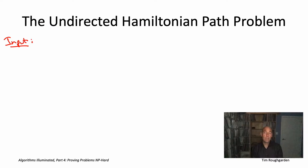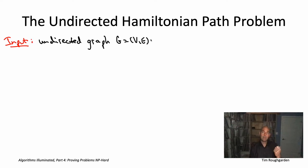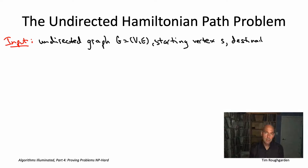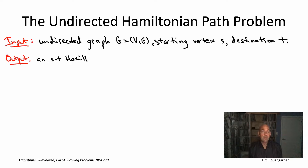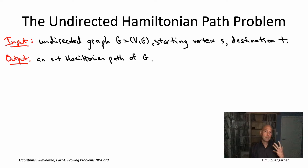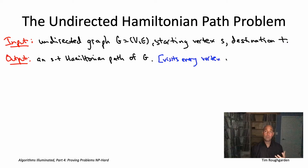The input is exactly the same as in the last video, except now with an undirected graph. You're given an undirected graph, a starting vertex S and a destination vertex T, and the goal is to compute an ST Hamiltonian path — an undirected path with one endpoint S and the other endpoint T.